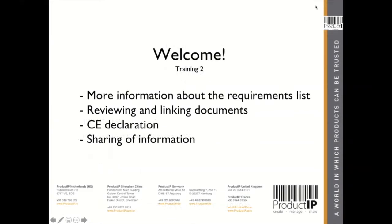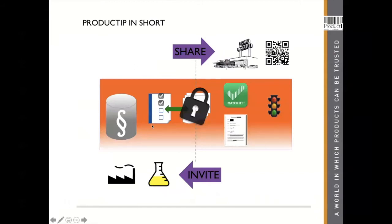Today's training is about more information about the requirement list, how to review and link the documents, how you can draw up your CE declaration, and how you can share the information. We explained the invite last week. Now we show you how you can review and link the documents, how we will monitor your requirements on your requirement list, and what you will do to create a new technical file and how you can share the information.